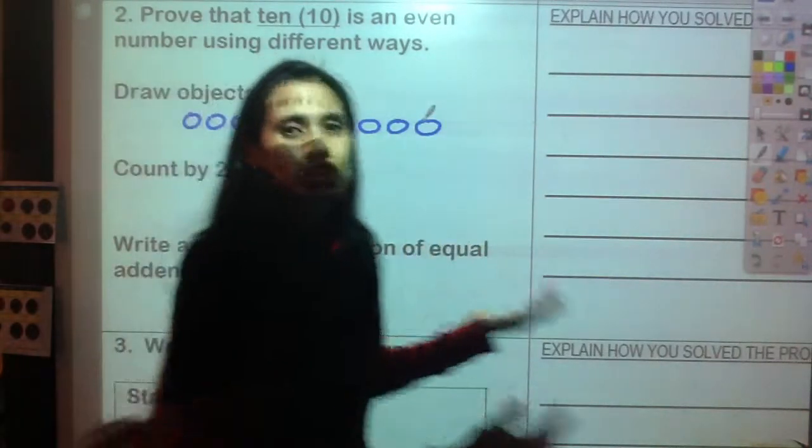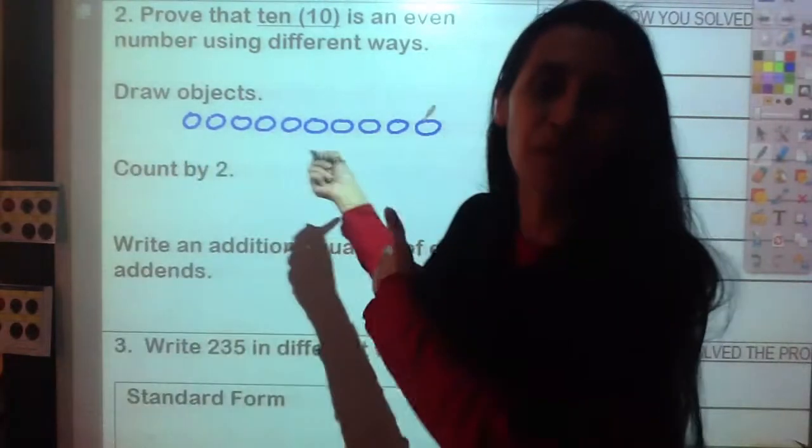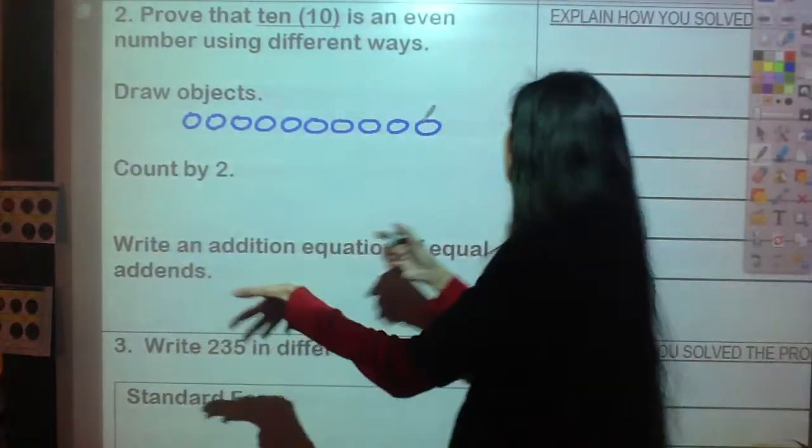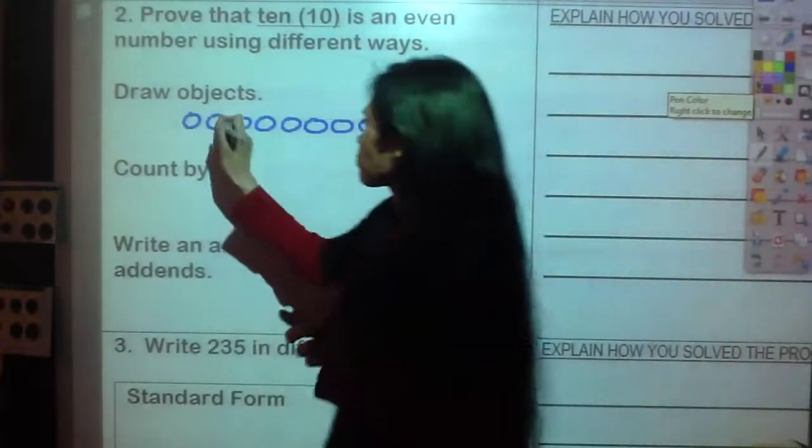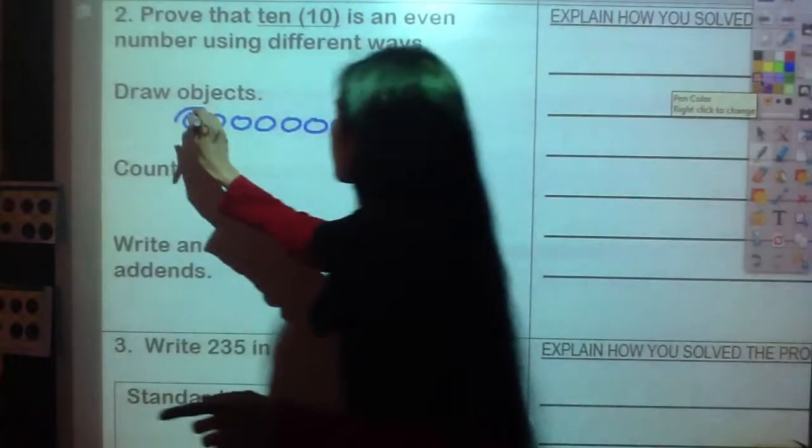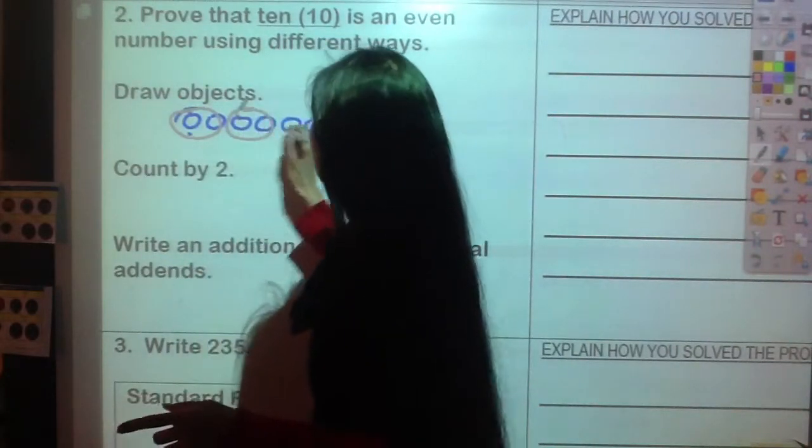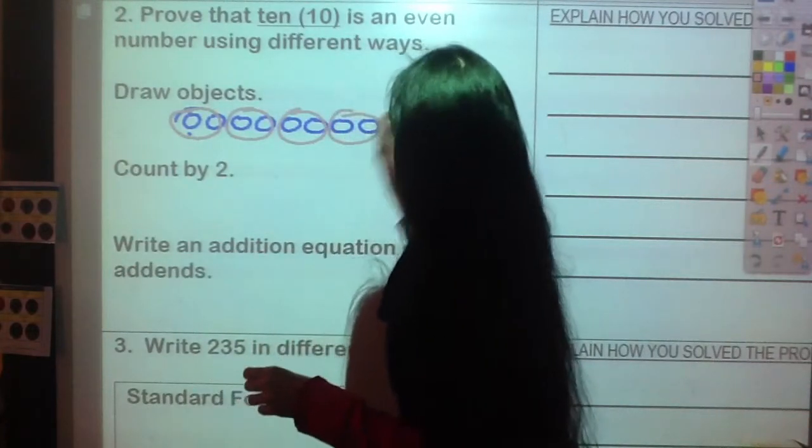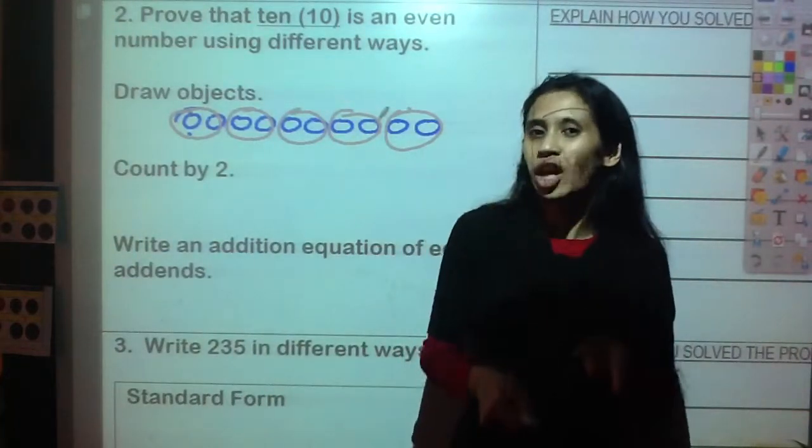Now, just drawing ten objects does not make it even. It does not prove that it's even. We have to do something. We have to partner them up, put them in pairs. Partner, you're my partner, you're my partner, you're my partner, and you're my partner. Look, everyone has a partner, so that makes it what kind of number? An even number.